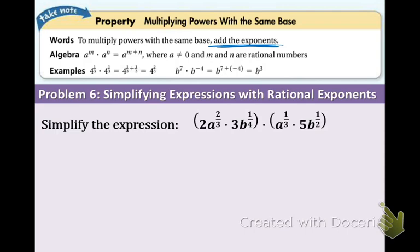Just sort through and combine like terms, put everything next to each other that's like terms. So we're going to take the 2, the 3, and the 5 and put them next to each other. 2 times 3 times 5. Now let's put the a's together, a to the 2 thirds times a to the 1 third, and then the b's together, b to the 1 fourth times b to the 1 half.